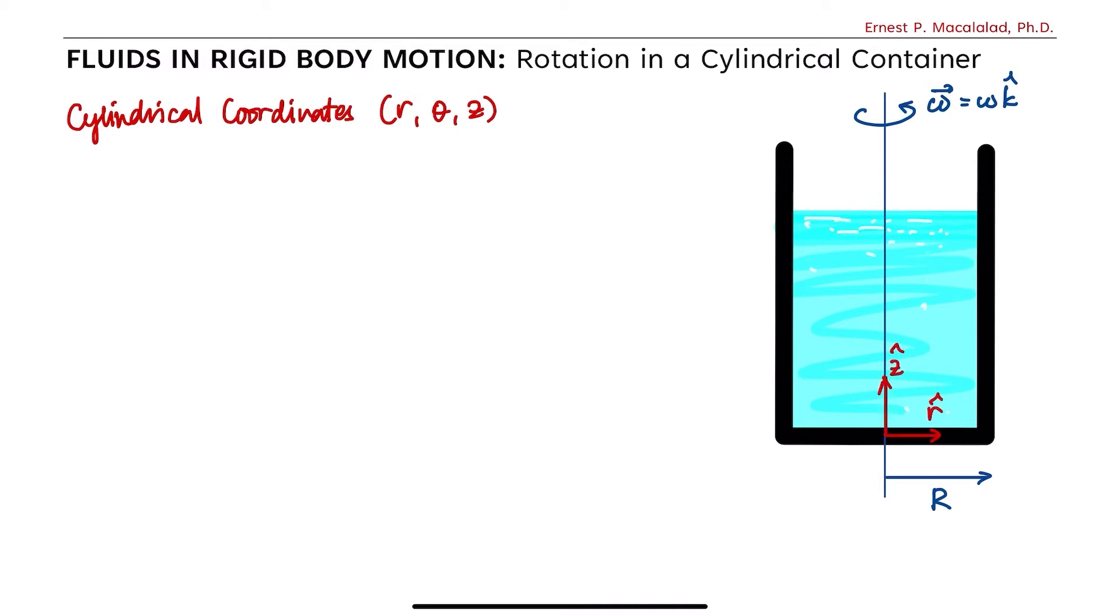This is r and this is z. So each element within the fluid undergoes uniform circular motion with acceleration given by the centripetal case, and that is a equals negative r omega squared.